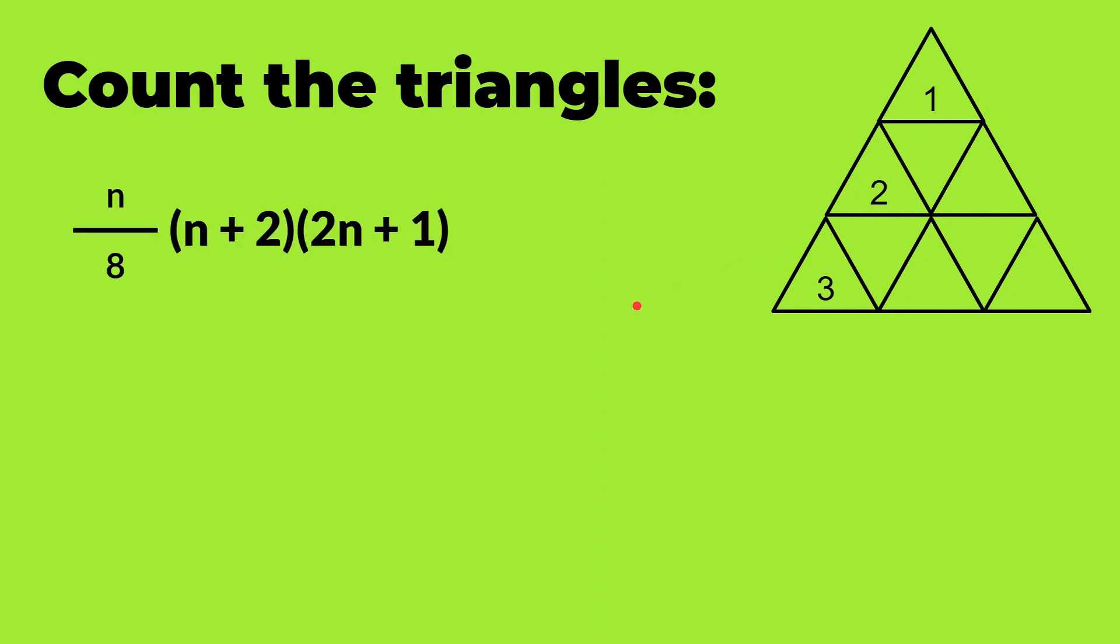So let's see the formula n divided by 8 times n plus 2 times 2n plus 1. So n will be 3. Substituting the values we get 3 times 3 plus 2 times 2 times 3 plus 1 divided by 8. So that is 3 times 5 times 7 divided by 8.